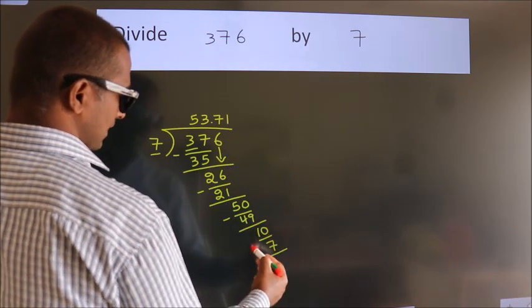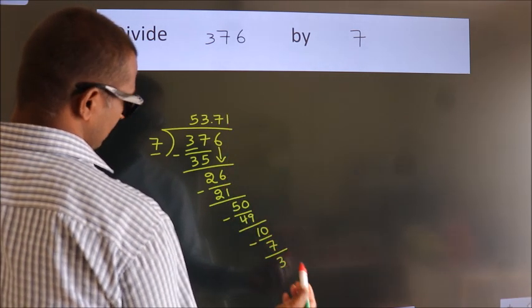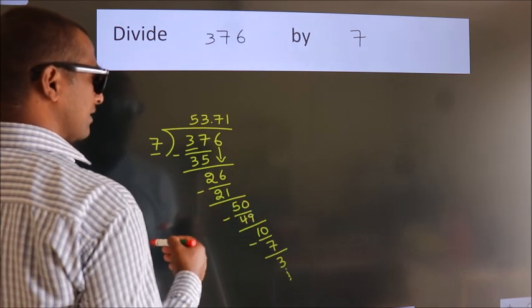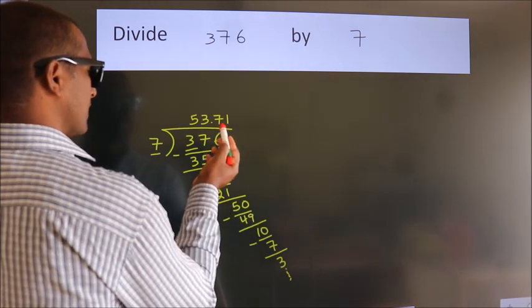Now we subtract. We get 3. And the division continues. It is enough if we do up to 2 decimal places.